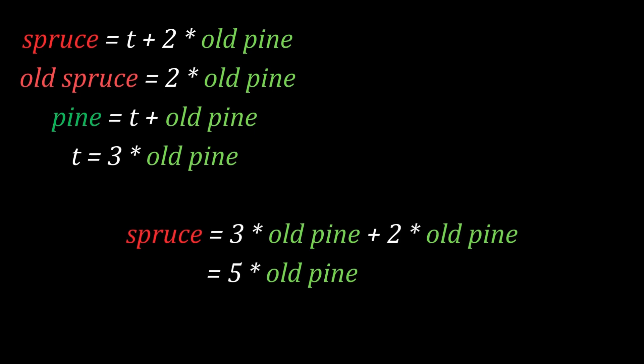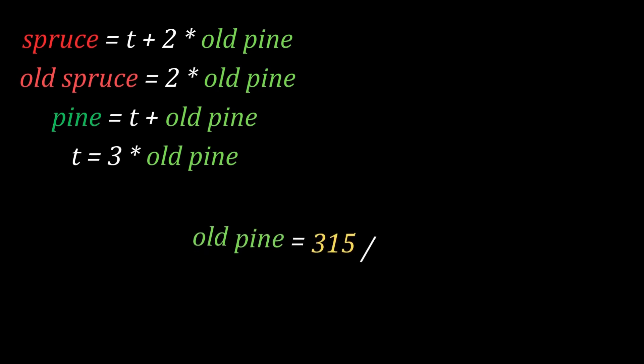And this is perfect because we know exactly how old the spruce is. It's 315 years old. So now we can divide 315, the current age of the spruce, by 5 and we get the old pine age, which is 63.